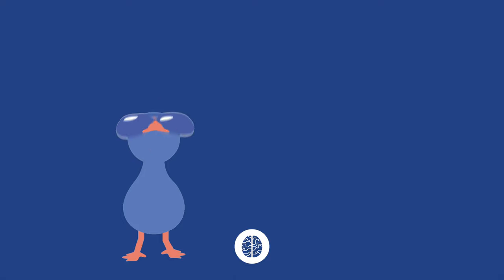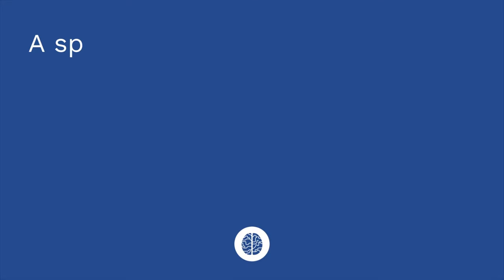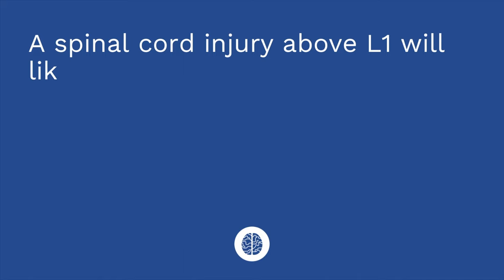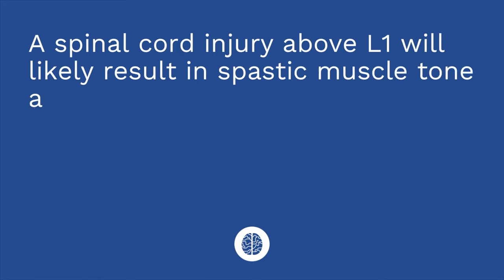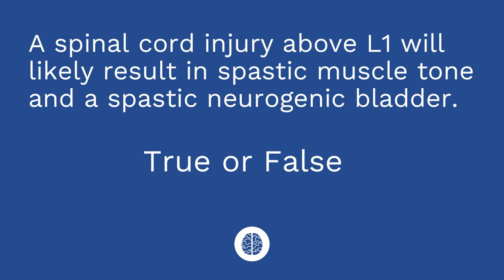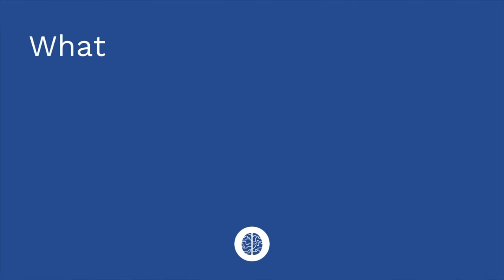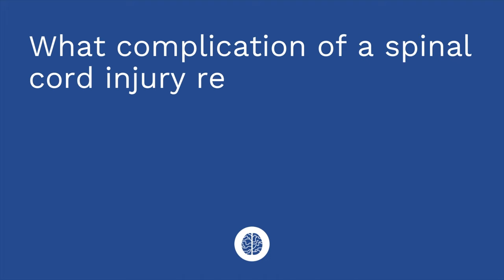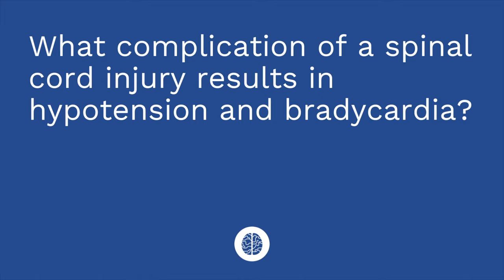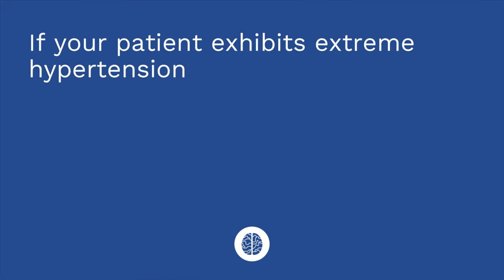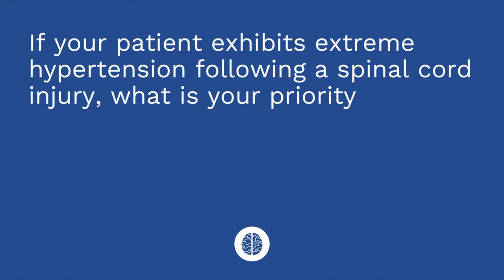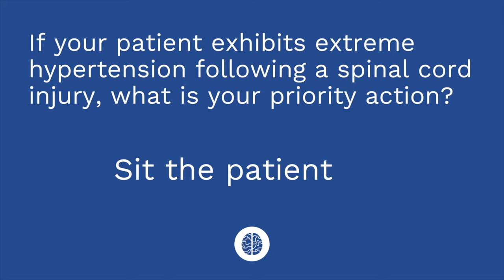Time for a quiz — three questions. First: a spinal cord injury above L1 will likely result in spastic muscle tone and a spastic neurogenic bladder — true or false? The answer is true. Question two: what complication of a spinal cord injury results in hypotension and bradycardia? The answer is neurogenic shock. Question three: if your patient exhibits extreme hypertension following a spinal cord injury, what is your priority action? The priority action is to sit the patient up — that's the first thing you do.